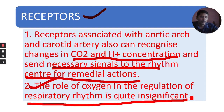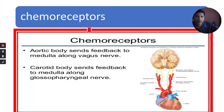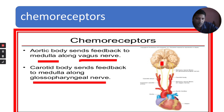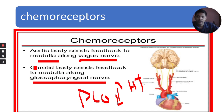The aortic body sends feedback to the medulla along the vagus nerve, and the carotid body sends feedback to the medulla along the glossopharyngeal nerve, carrying information regarding high pCO2 and H+ ion concentration. That is the end of the regulation of respiratory movements topic. We have one more topic remaining in this lesson — occupational respiratory disorders — and with that this chapter will be completed.